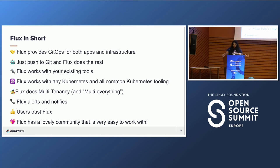Flux works with most common Kubernetes tooling — Kustomize, Helm, RBAC, and policy-driven validation such as OPA, Kyverno, and Admission Controllers. It really just falls into place with what you're doing. We also like to say it does multi-tenancy and "multi-everything." It uses true Kubernetes RBAC via impersonation and supports multiple Git repositories. Multi-cluster infrastructure and apps work out of the box with Cluster API — you can use one Kubernetes cluster to manage apps in other clusters, spin up additional clusters, and manage clusters including lifecycles and fleets.